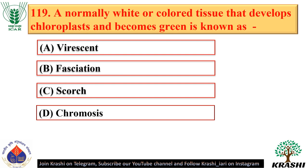Question number 119. A normally white or coloured tissue that develops chloroplasts and becomes green is known as virescent — option A.